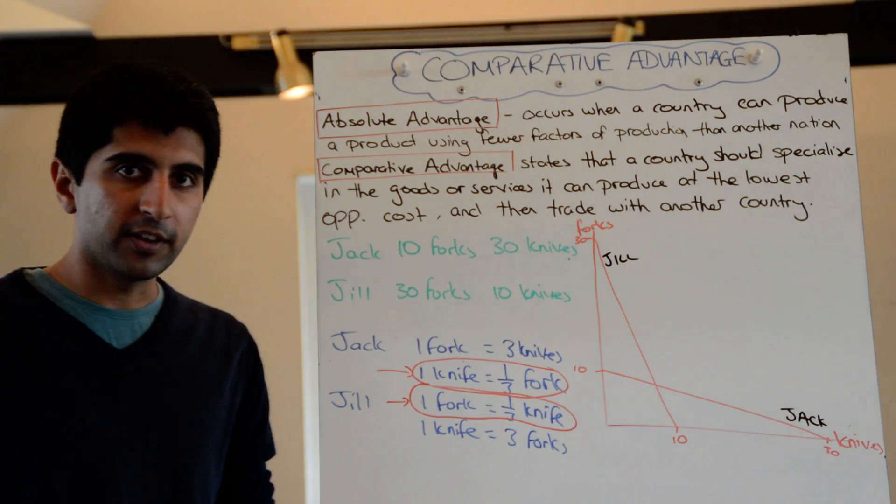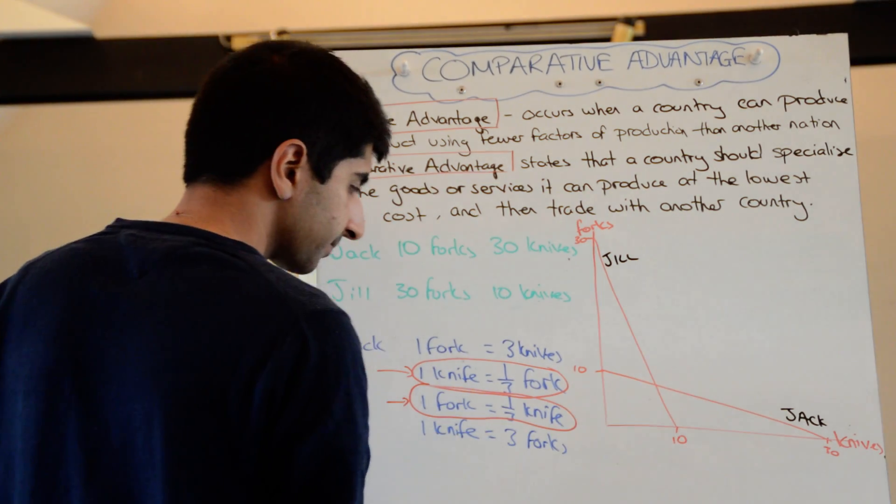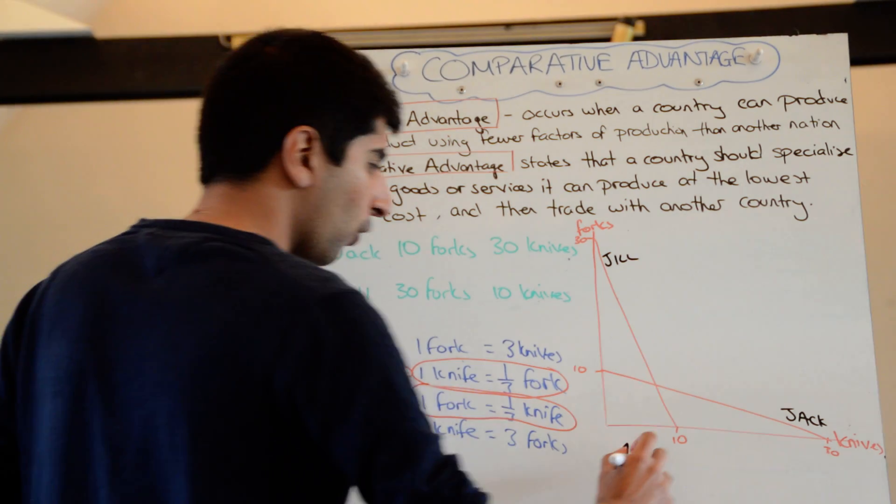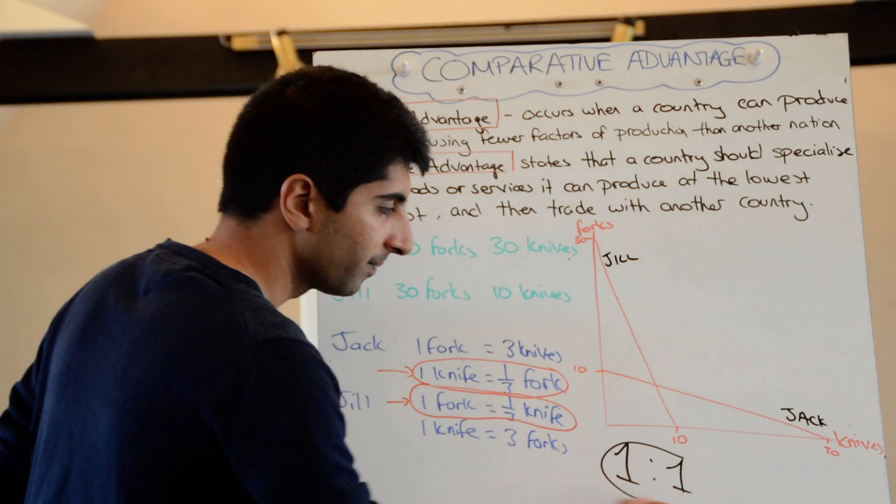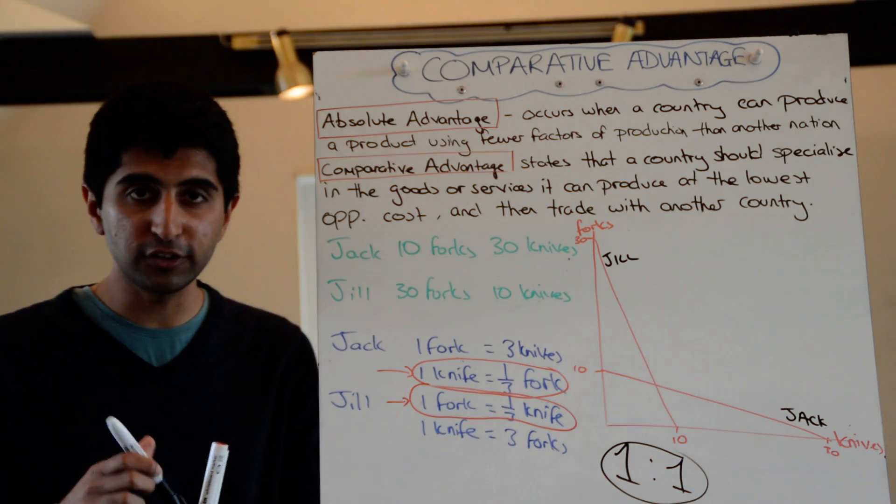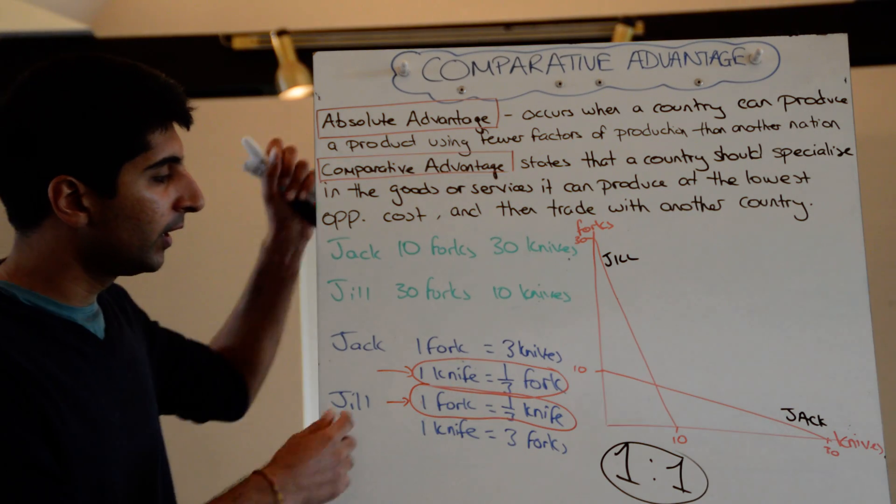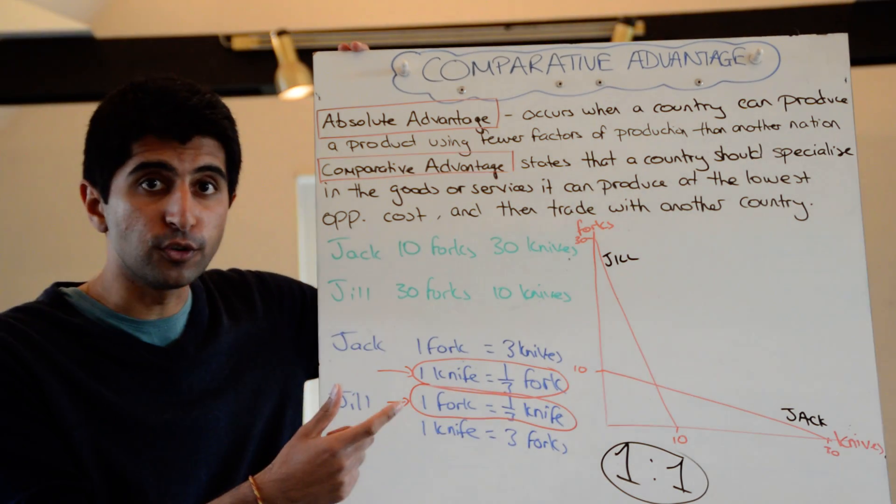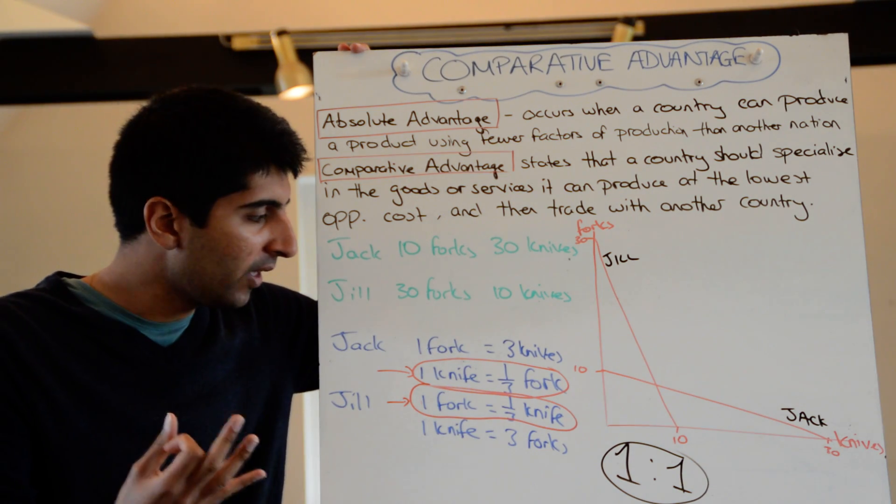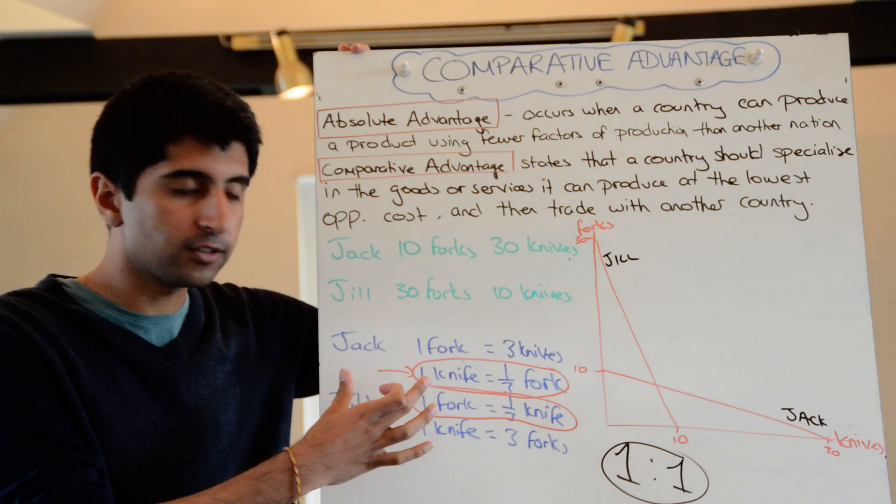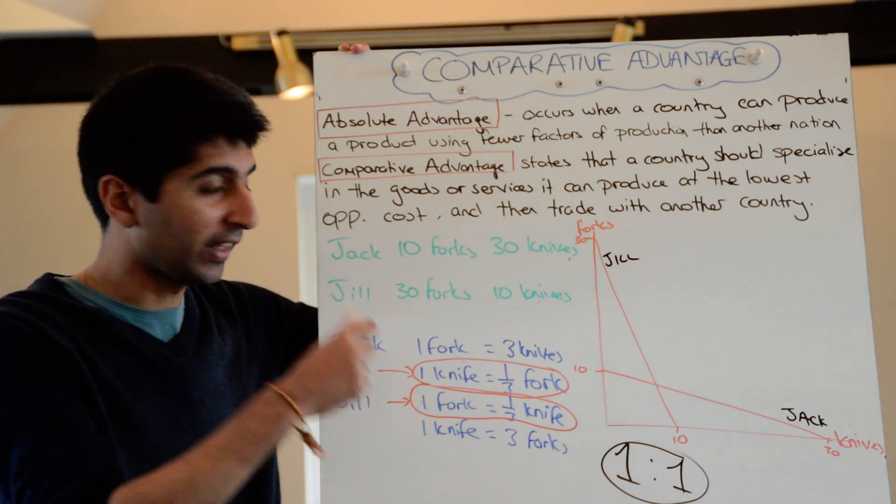Let's say a suitable rate of exchange is found, and that rate of exchange is for one fork to cost one knife. Is that suitable for both people? Yes it is. Let's have a look for Jack. For Jack, he could have produced one fork, but it would have cost him three knives. Now, if he specialized and only produced knives, to buy in one fork would have only cost one knife. So that is good for him.